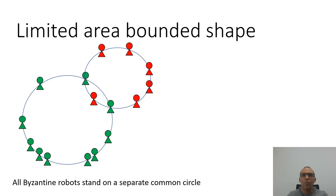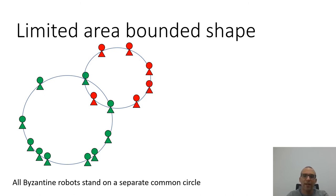It is important to note that Byzantine robots can join the shape structure at any time and stop being considered Byzantine. On the other hand, robots may decide not to join the shape and are then identified as Byzantine.